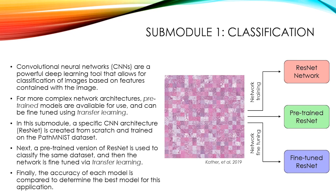The first submodule is classification. Convolutional neural networks, or CNNs, are a powerful deep learning tool that allows for classification of images based on features contained within the image. For more complex network architectures, pre-trained models are available and can be fine-tuned using transfer learning. In this submodule, a specific CNN architecture called ResNet is created from scratch and trained on the PATH-MNIST data set, which contains pathological images of thin sections of colorectal cancer. A pre-trained version of ResNet is also used to classify the same data set and fine-tuned via transfer learning, and the accuracy of each model is compared to determine the best model for this application.